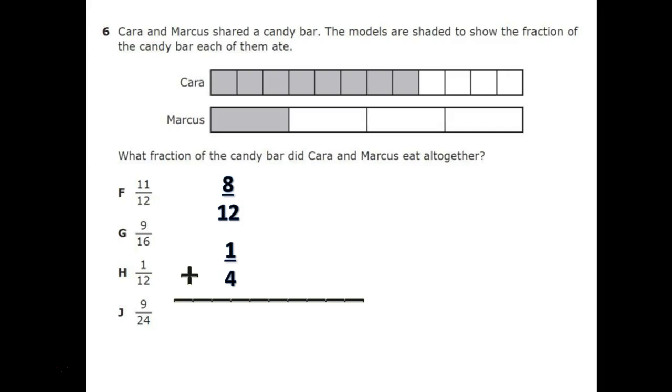For that, we would use the LCM. What you do is you get your denominators, the 4 and the 12, and then you find the multiples. Starting with the 4, you have 4, 8, 12, 16, 20, 24. Then you do the 12s: 12, 24, 36.